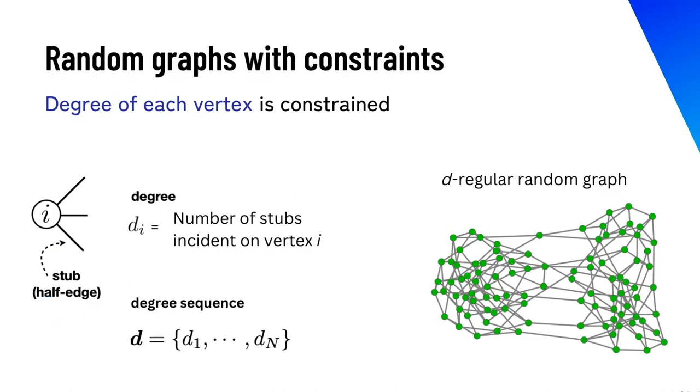This paper considers a random graph with a prescribed degree sequence. For example, the d-regular random graph is the model in which every vertex has degree d. This is a classical model that has been studied in the field of random graph theory.